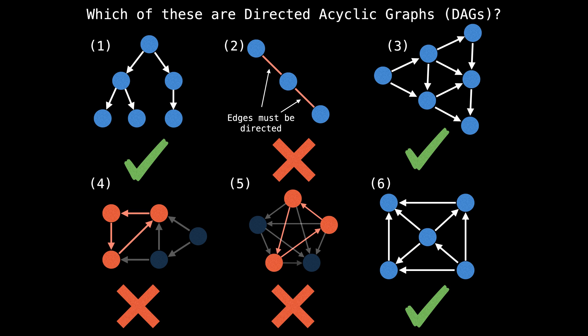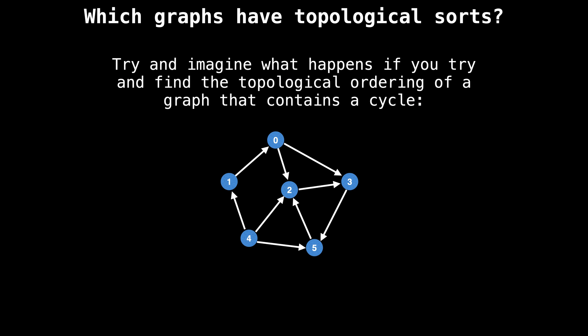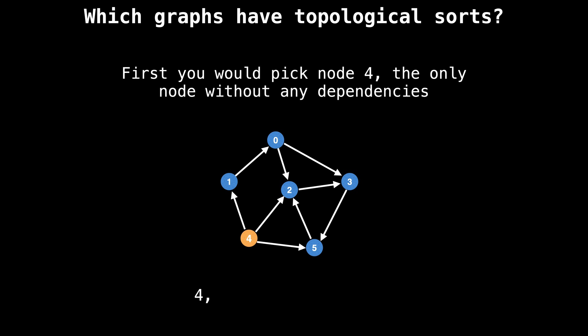Graph two has undirected edges instead of directed edges, so it's not a directed acyclic graph. Graphs four and five have directed cycles, so they're not directed acyclic graphs. Take a moment and think about why we require the graph we're trying to find the topological sort of not to contain any cycle. Try and imagine what happens if you try and find the topological ordering of a graph that does contain a cycle.